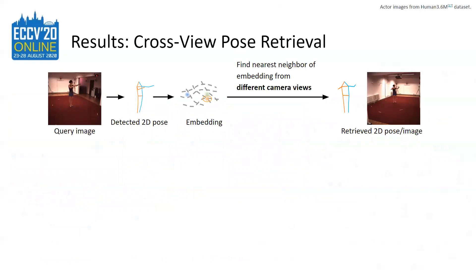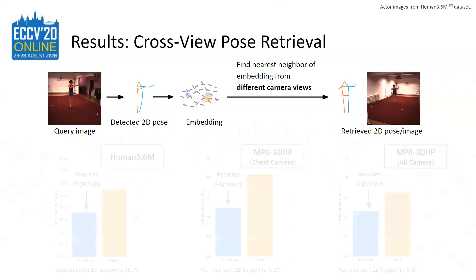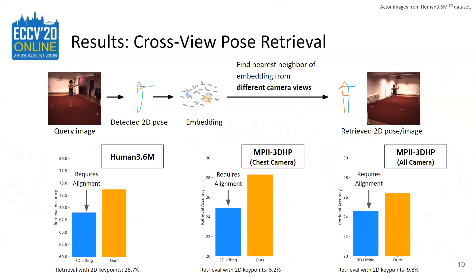Given a 2D pose from a query image, we can use our view-invariant embeddings to retrieve an image with a similar 3D pose across views. We do so by computing the pose embedding of the query pose, then retrieving the nearest neighbor in the embedding space from all embedded 2D poses from different views. The retrieved nearest neighbor is evaluated quantitatively: it is accurate if the corresponding 3D pose matches the query 3D pose. We establish a baseline for cross-view pose retrieval, and our embeddings retrieve poses across views more accurately compared to using 3D poses from existing 2D-to-3D lifting methods.